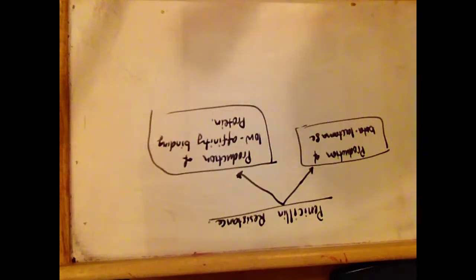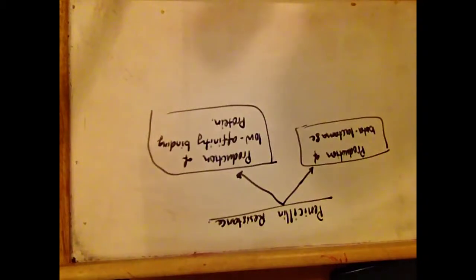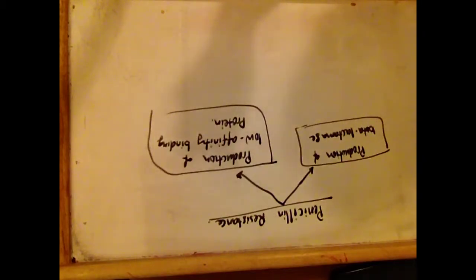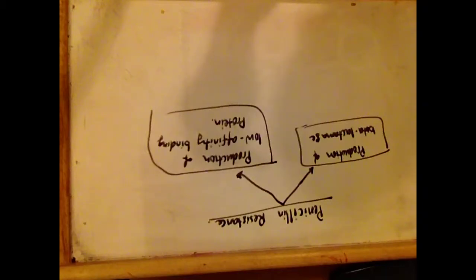Penicillin resistance. Bacterial resistance to penicillins can occur via two mechanisms. One of the mechanisms is the production of beta-lactamase by bacterial cells.